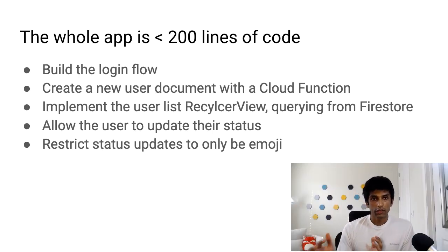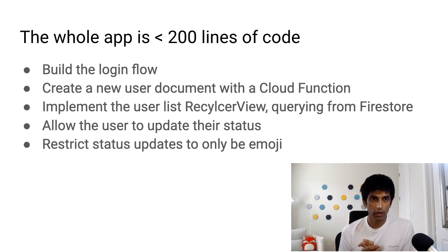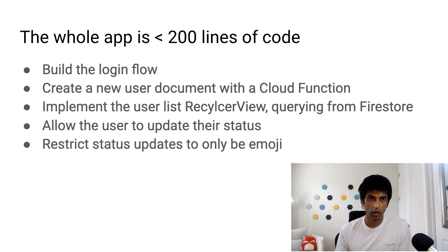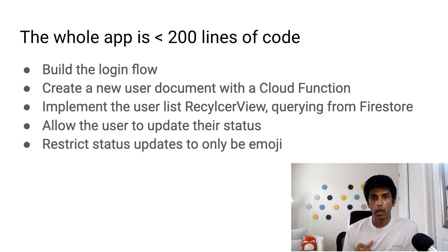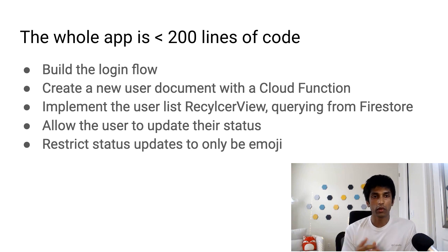Even though there are a few moving pieces here, the whole app is less than 200 lines of code. The way I want to build this out is: first in the next video we'll build the login flow, then we'll create a new user document with a Cloud Function whenever the user signs up, then we'll implement the list of users in a RecyclerView querying from Firestore, then we'll allow the user to update their status using the edit icon, and finally we'll restrict the input to only accept emoji.